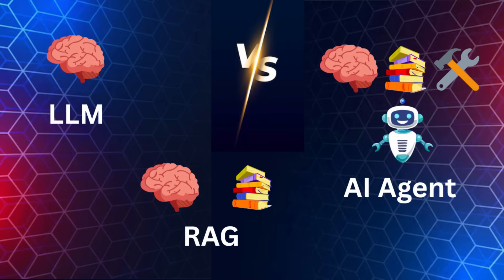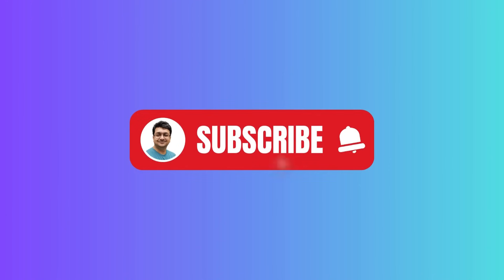We've all heard the buzzwords — LLMs, RAG, AI agents. They're everywhere. But what's the real difference? And more importantly, why should you care? In today's video, I'll break down these three pillars of modern AI: how they work, how they're different, and where they're headed. By the end, you'll know why ChatGPT isn't the same thing as an AI agent, and why adding RAG can make your AI 10X smarter.